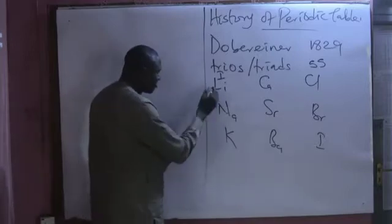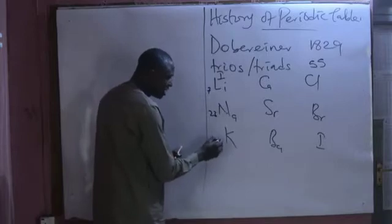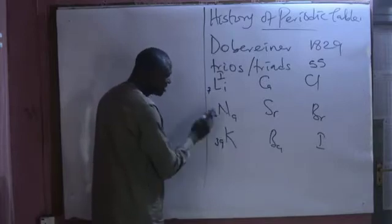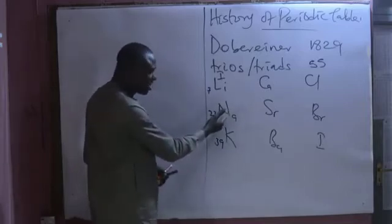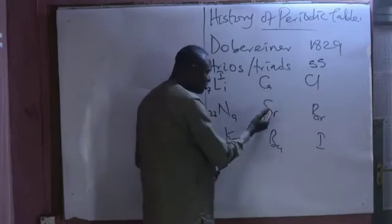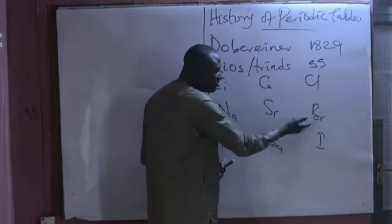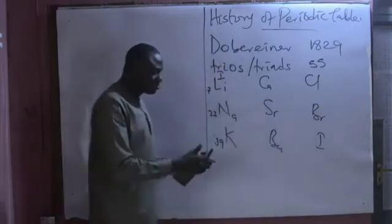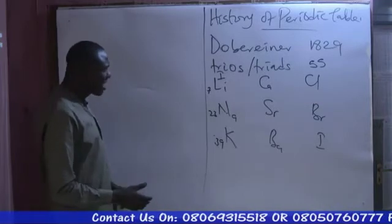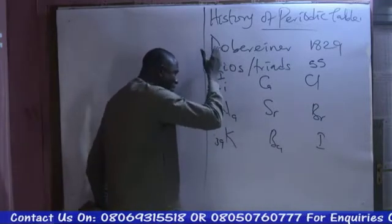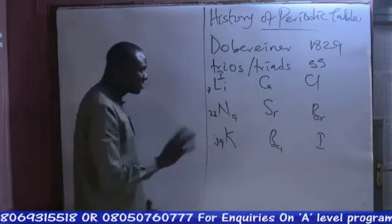For instance, the atomic weight of lithium is approximately 7, sodium is 23, and potassium is 39. If you add 7 to 39 and divide by 2, you are going to get 23, which is the atomic weight of sodium. You can repeat the same thing for calcium, strontium, and barium. If you add the atomic weight of chlorine to that of iodine and divide by 2, you get approximately the atomic weight of bromine. According to him, all members of a particular triad have similar chemical characteristics.